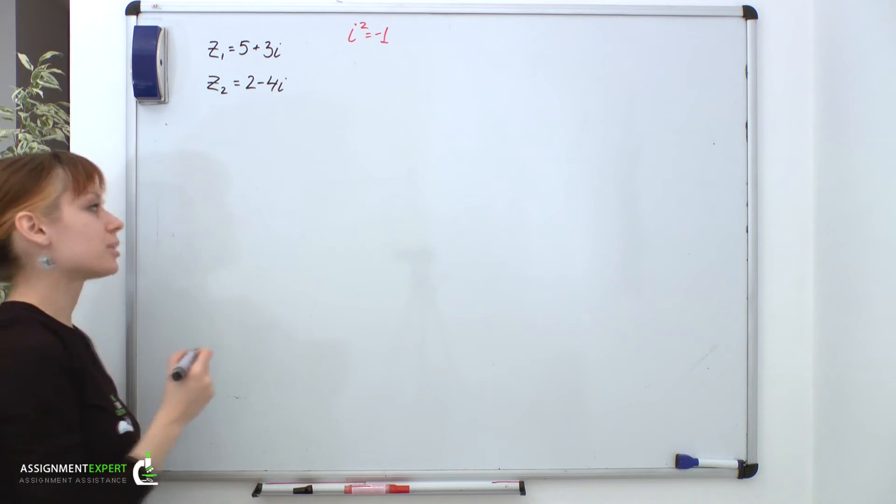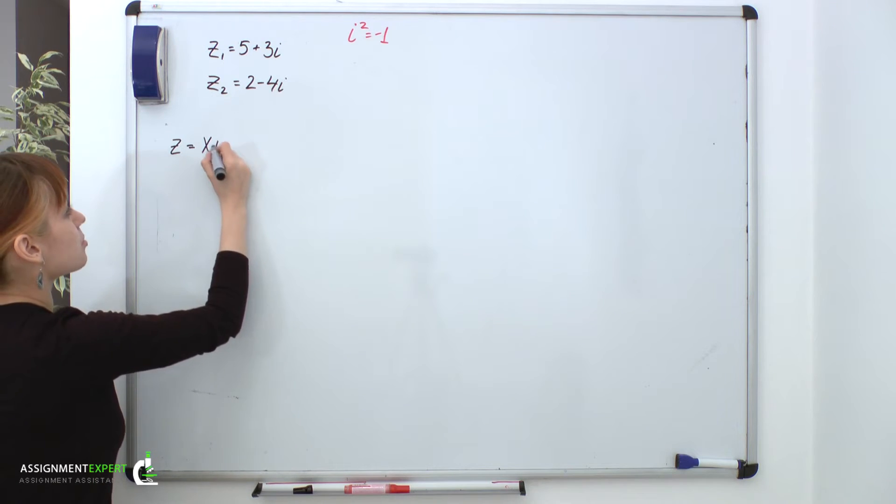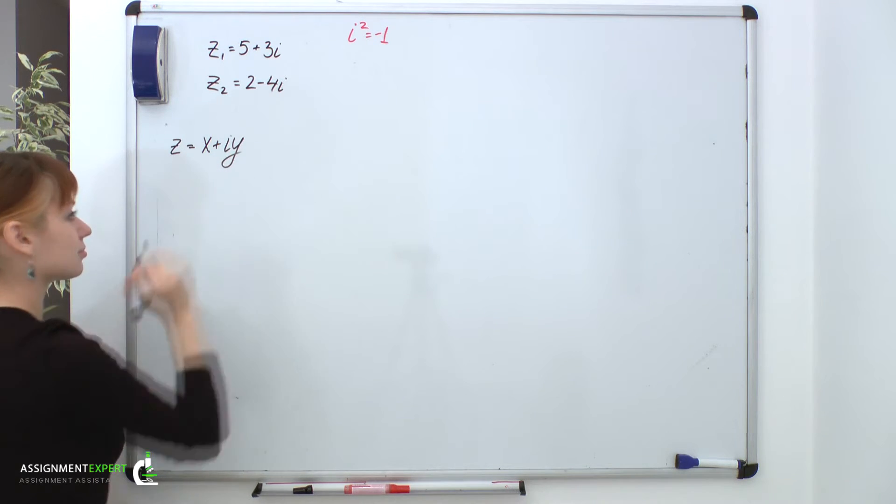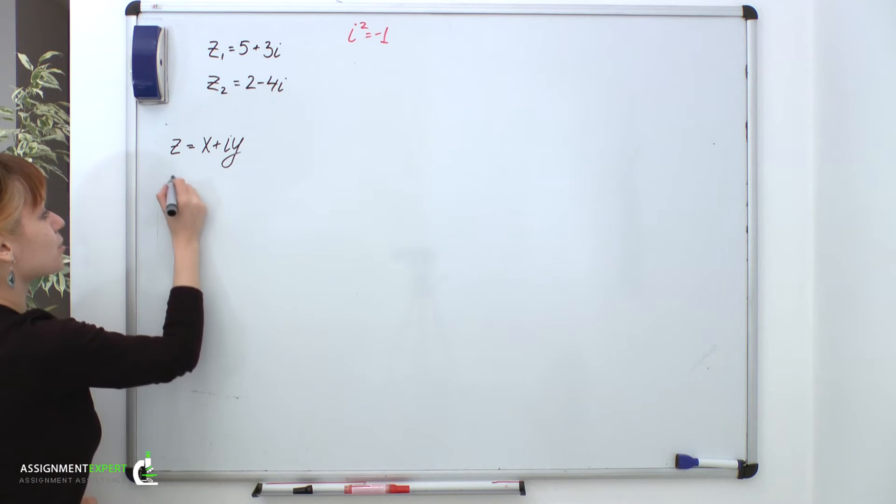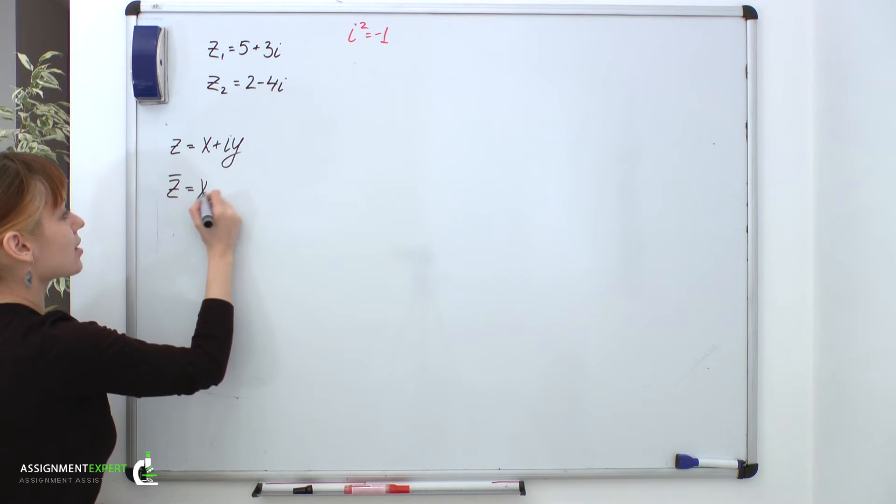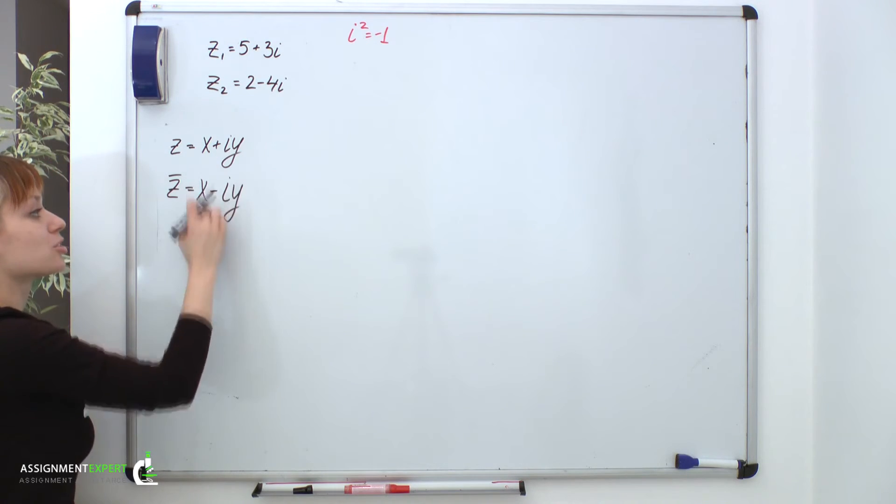Suppose we have a complex number given in general form: z equals x plus i y. Its complex conjugate is denoted as z with a dash and is equal to x minus i y. So, the sign in front of the imaginary part is different.